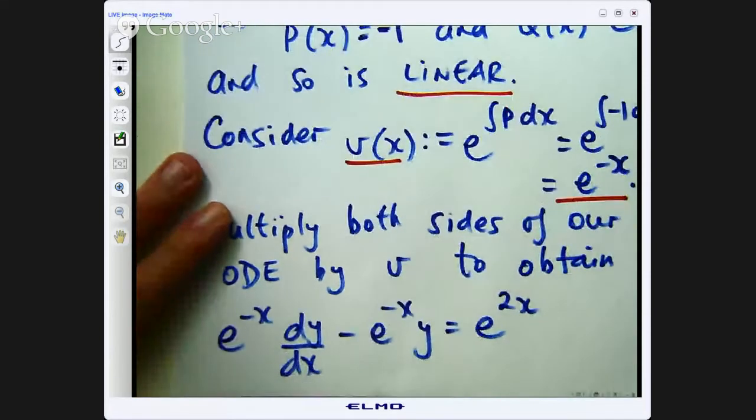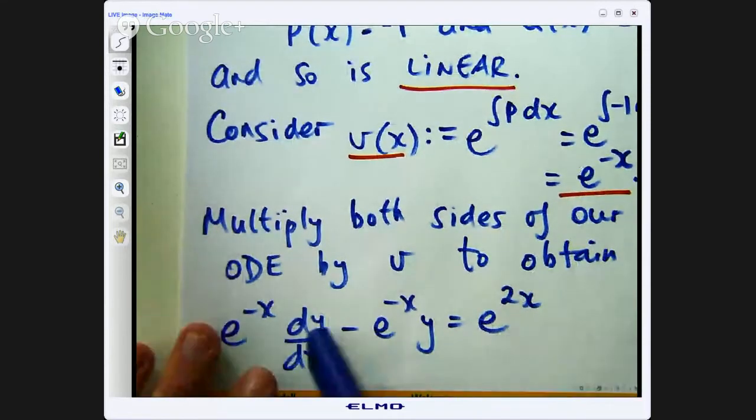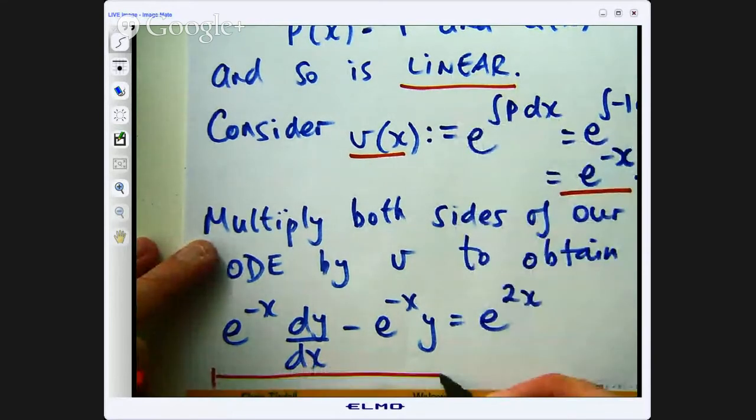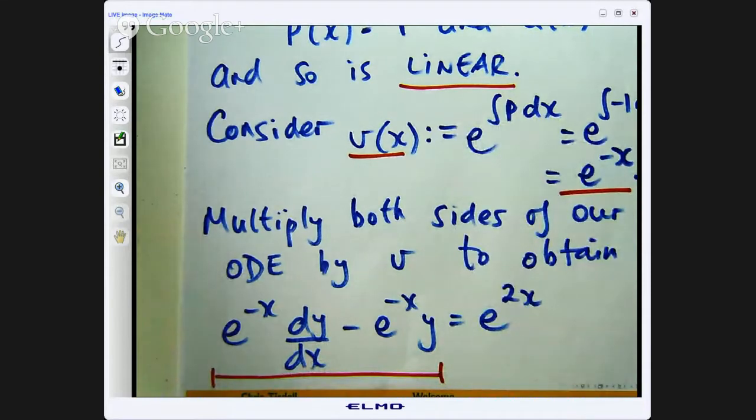So now you might think well hang on this looks very messy indeed. What is going on here? Well this technique allows us by multiplying by this magic function, this integrating factor, to compress the left hand side down to the derivative of a special product. The left hand side of the bottom line is going to be compressed to the derivative of a special product. Now that special product is going to include the unknown function y and the magic function, the integrating factor, in this case e to the negative x.